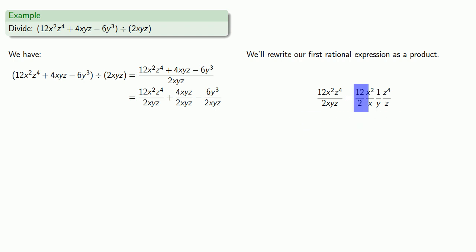Our first fraction, 12 over 2, can be reduced. x^2 over x can be reduced. We're kind of stuck with the 1 over y, so we'll leave that alone. But we'll reduce z^4 over z. We'll rewrite our product as a single rational expression. And if it's not written down, it didn't happen.